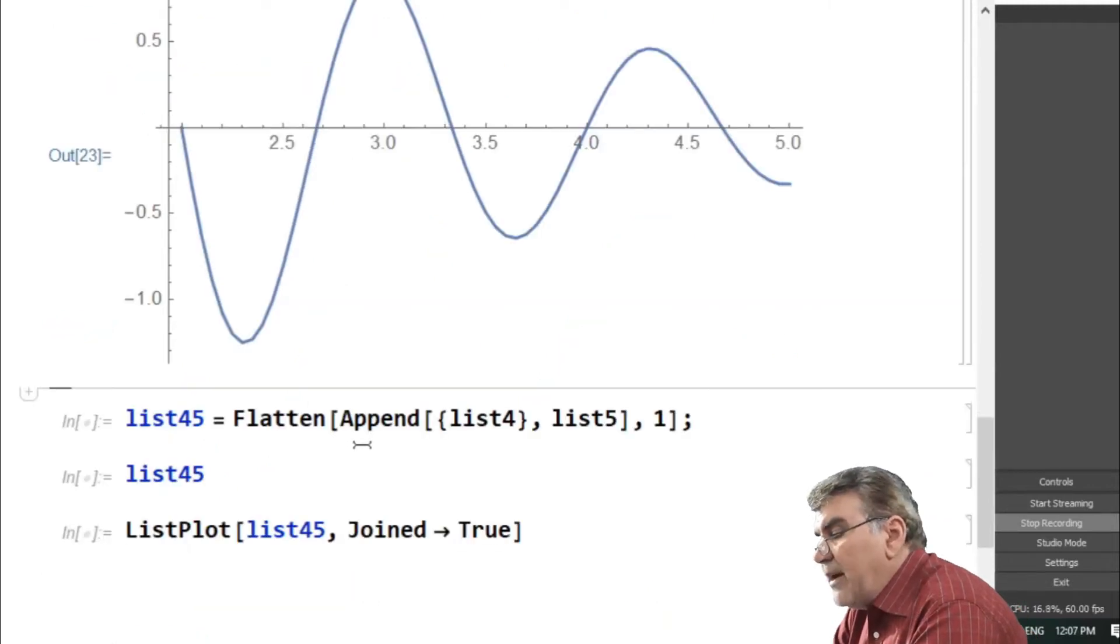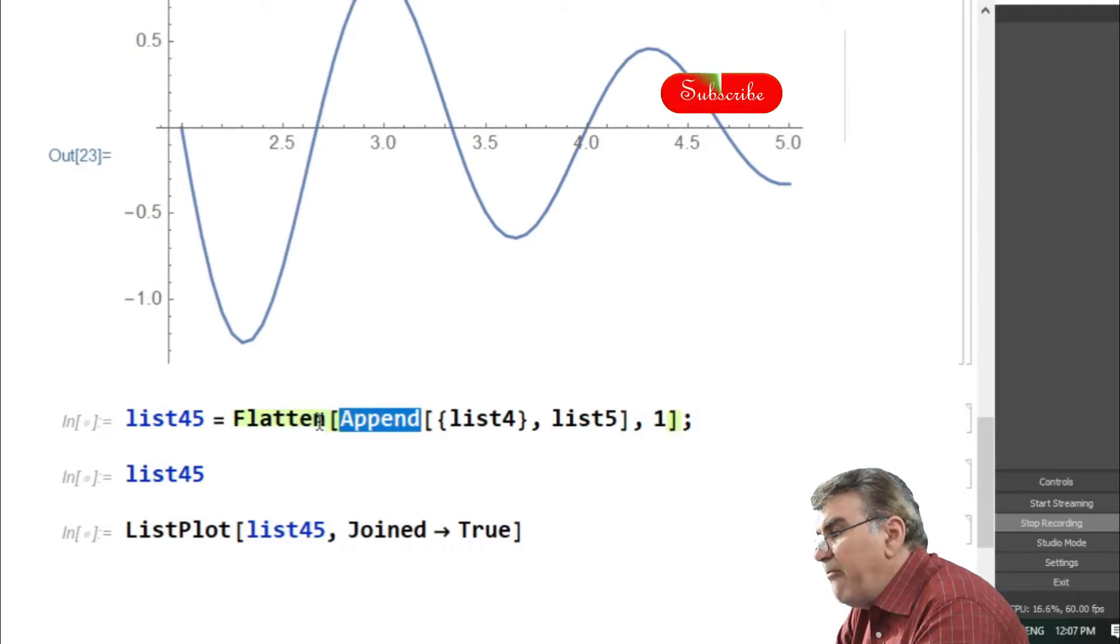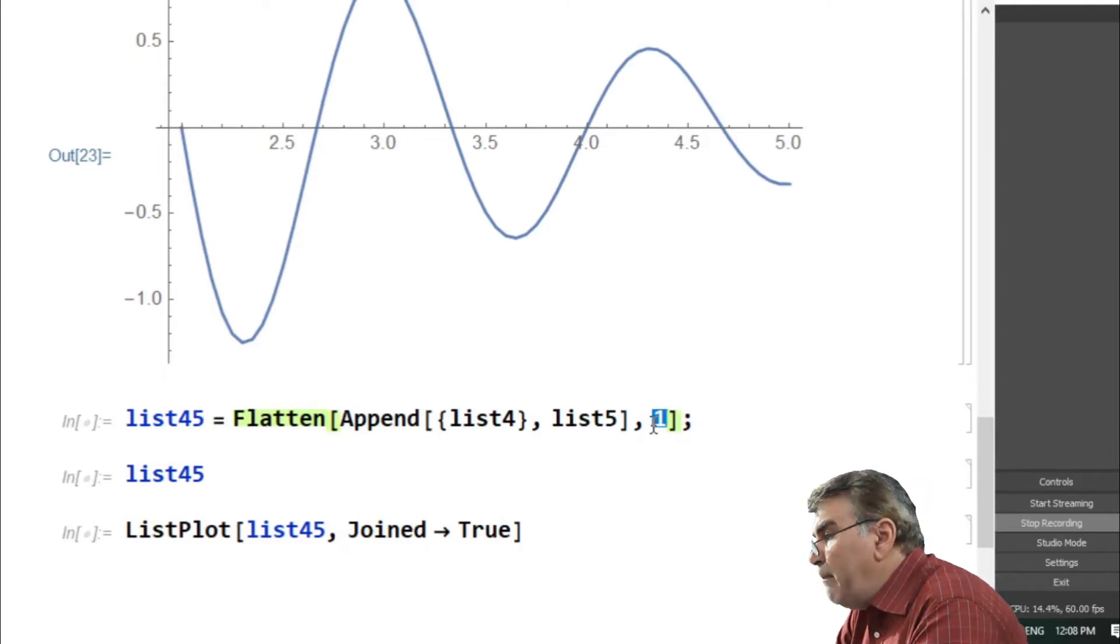I want to combine these two plots into a single one. This I can do by using the append command in addition to the flatten command. Here, the argument 1 is used to flatten the resultant list by removing one pair of curly braces from the result.